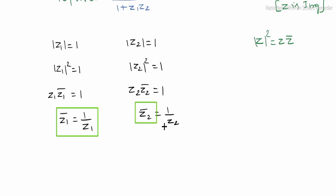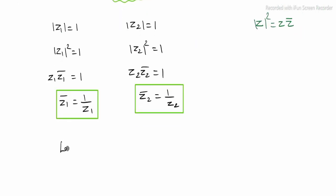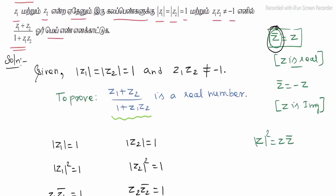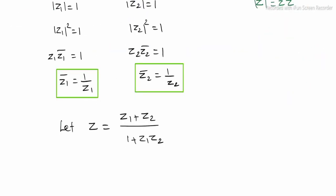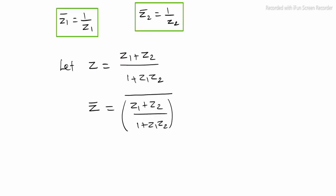Let z be equal to z1 plus z2 divided by 1 plus z1 into z2. Now we take z bar, which is equal to z1 plus z2 divided by 1 plus z1 into z2, whole bar.